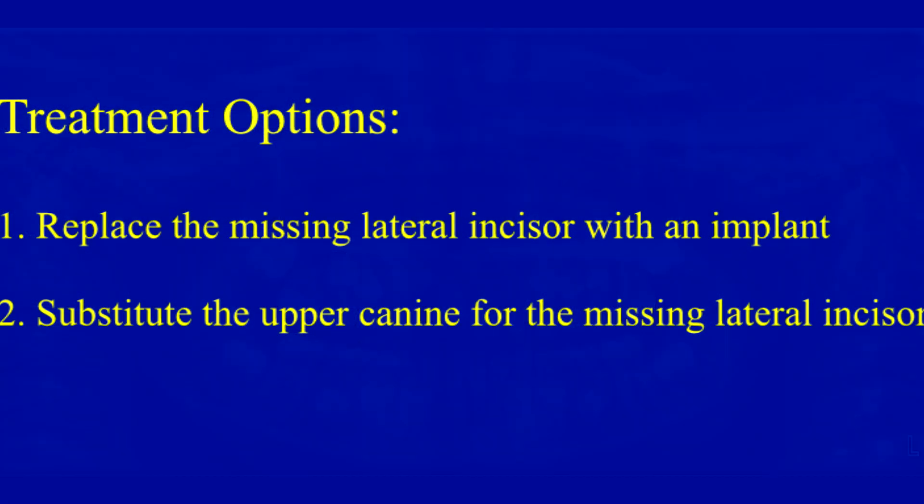A missing lateral incisor can be treated in two ways. It can be replaced with a dental implant, or the lateral incisor space can be closed completely with braces and the canine — which is the next tooth over — can be substituted for the missing lateral incisor. There are advantages and disadvantages to both options.